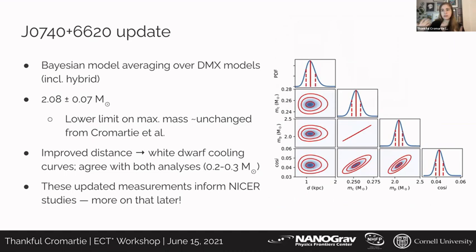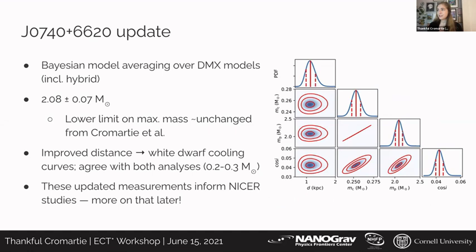The complication introduced by the increased observing cadence involves our modeling of dispersion measure. We use DMX in NANOGrav — an epoch-by-epoch piecewise linear fit to dispersion measure — and how you bin that makes a difference. Three different methods were tried and Bayesian model averaging over those three models was used to derive the results. The combined mass constraint is 2.08 ± 0.07 solar masses, which is really phenomenal. We're not particularly surprised that the mass was revised down slightly, but it's great that the lower limit is essentially unchanged from the Cromartie et al. result.